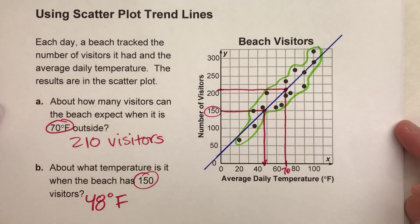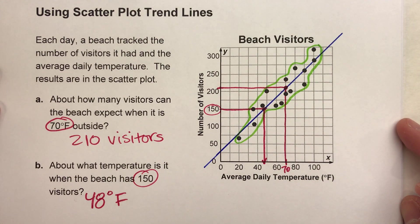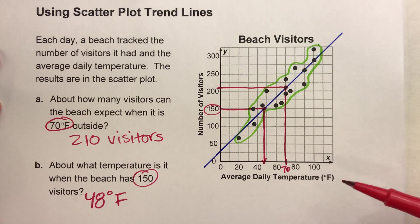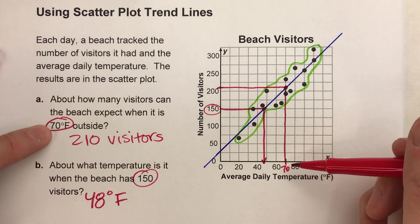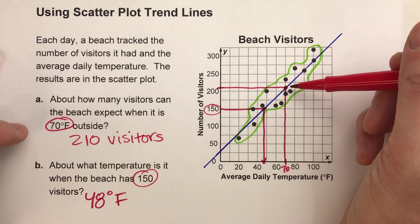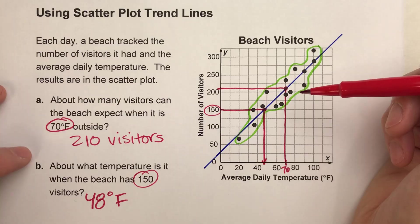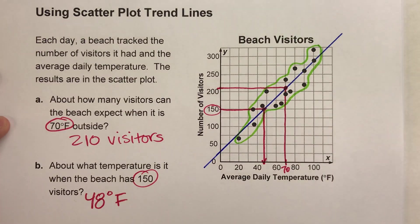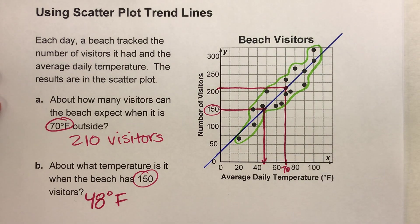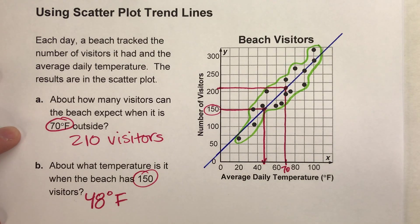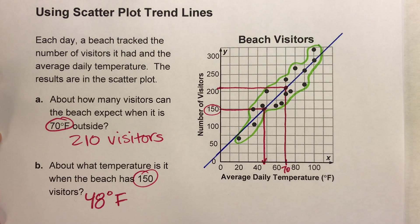So that's what we do when estimating answers using the trend line: find the value they give you, go up until you hit the trend line, and then go over to figure out the answer. Hopefully you found this video helpful — if you did, please hit that like button and subscribe because it really helps us out. Good luck on your math, and I will see you next time.